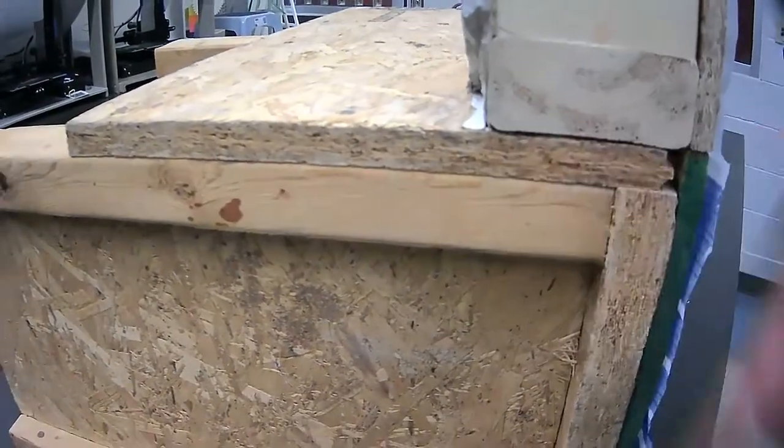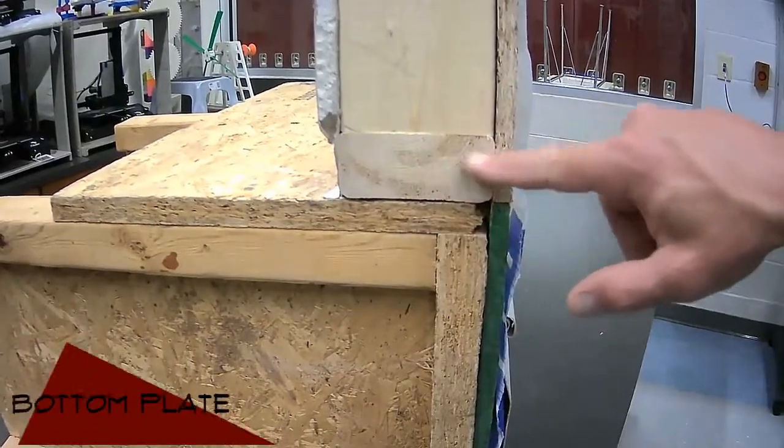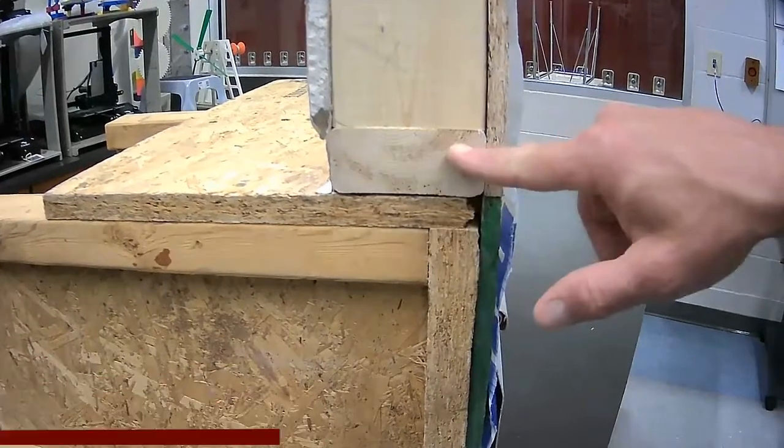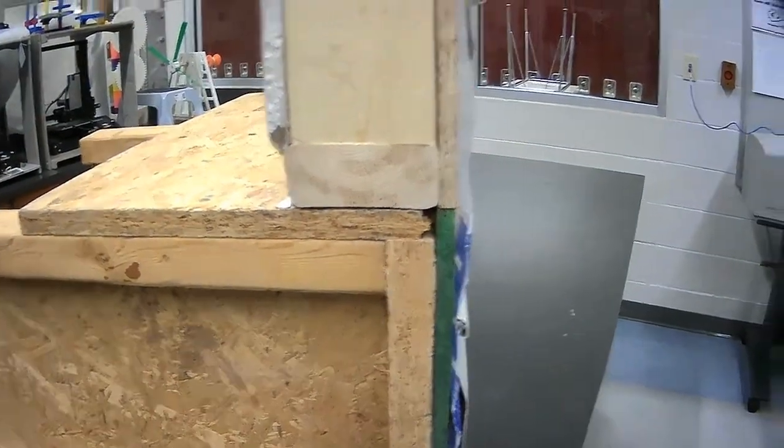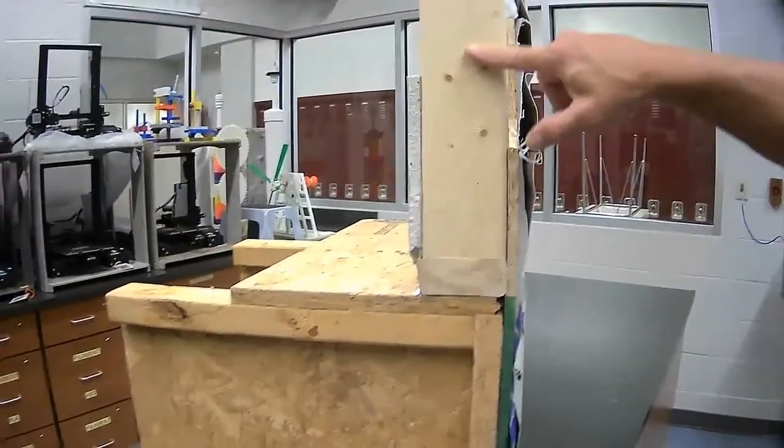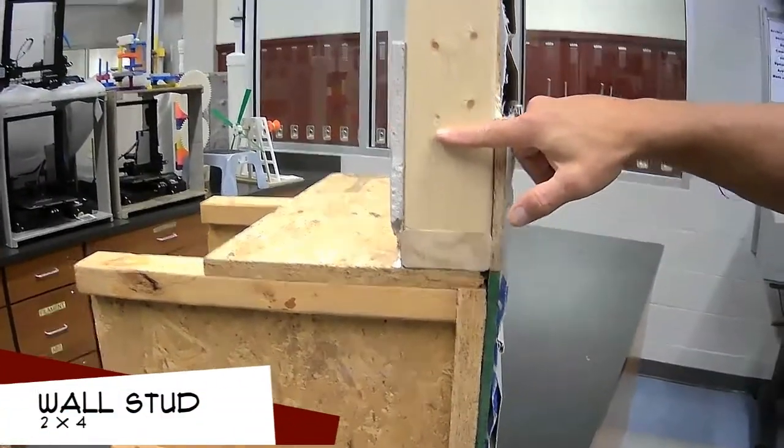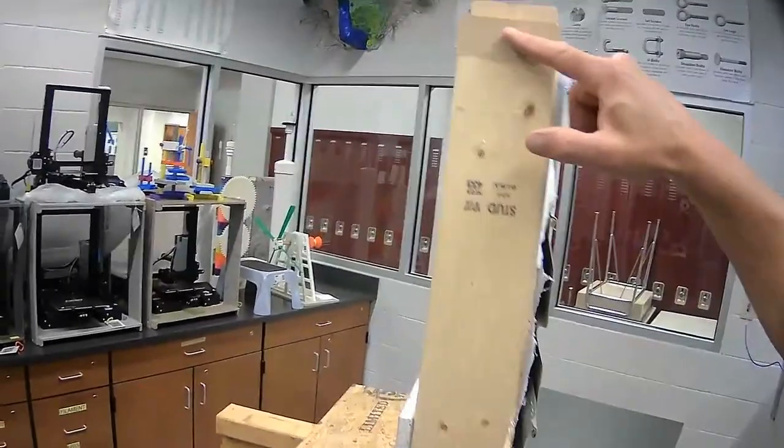As we continue up the wall, we have the bottom plate of our wall, also called the sill of the wall but generally called the bottom plate. Coming up you can now start to see we have a stud. This is a two-by-four wall stud that runs all the way up the wall to the double top plate.